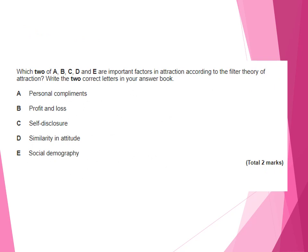Some AO1 type questions you might encounter. Here's a multiple choice question: which two are important factors in attraction according to filter theory? Write down two correct letters in your answer booklet. Remember with Paper 3 it will be a separate question booklet and answer booklet, so write your answer really clearly. The correct answers are D and E — similarity in attitudes, which is the second filter, and social demography, which is the first filter.